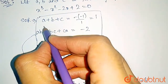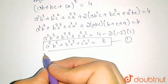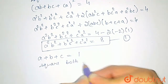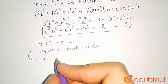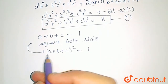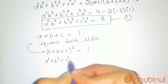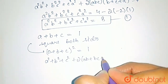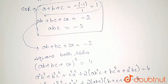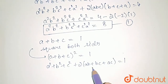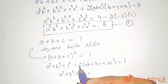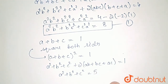Now taking a + b + c = 1 and squaring both sides, we get a² + b² + c² + 2(ab + bc + ca) = 1. The value of ab + bc + ca is minus 2, so substituting gives a² + b² + c² + 2(-2) = 1, which means a² + b² + c² = 1 + 4 = 5.